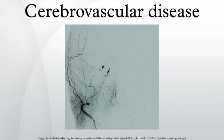The anterior cerebral artery (ACA) transmits blood to the frontal and parietal lobes. From the basilar artery arise two posterior cerebral arteries. Branches of the basilar artery and the posterior cerebral artery supply the occipital lobe, brainstem, and the cerebellum.